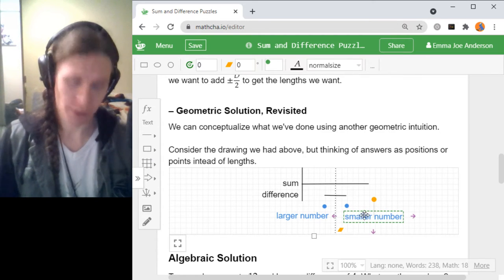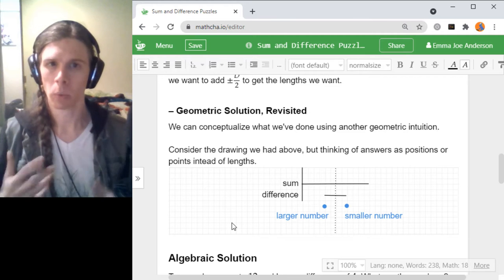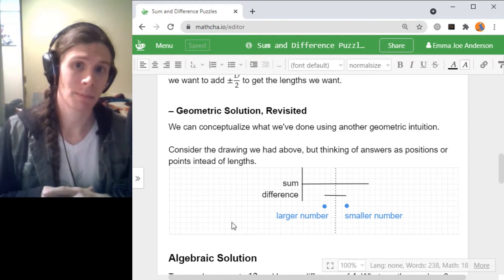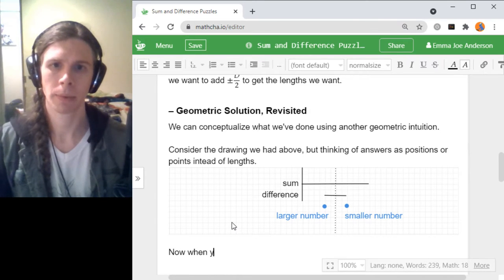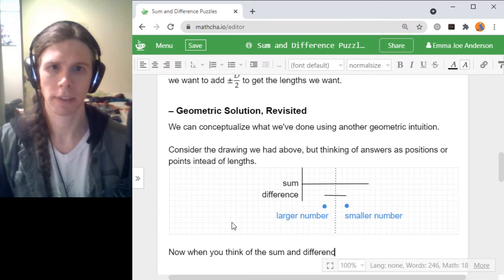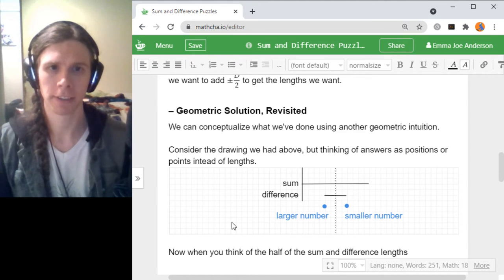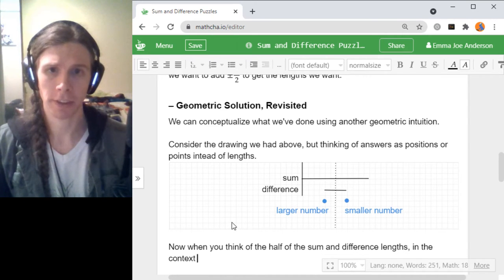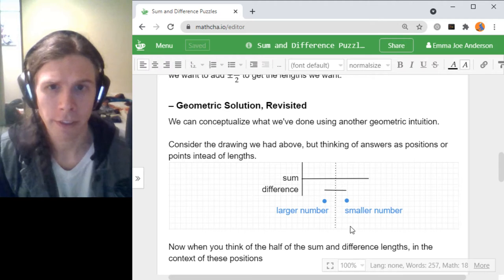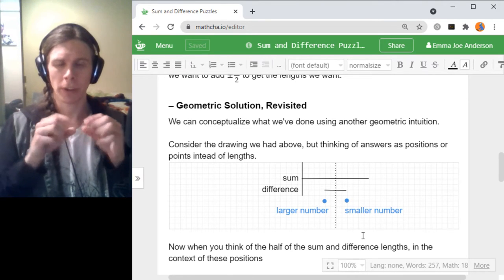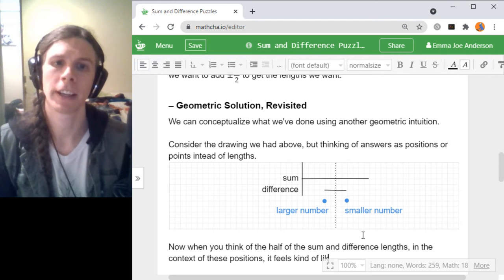So now we've got this notion where there are these points, and whenever you think of them as points instead of lengths, what the sum and difference lengths represent ends up morphing, in particular when you cut it in half. So now when you think of half of the sum and difference lengths in the context of these positions, it looks like this is fairly analogous to like a circle, where you have a center and a radius.